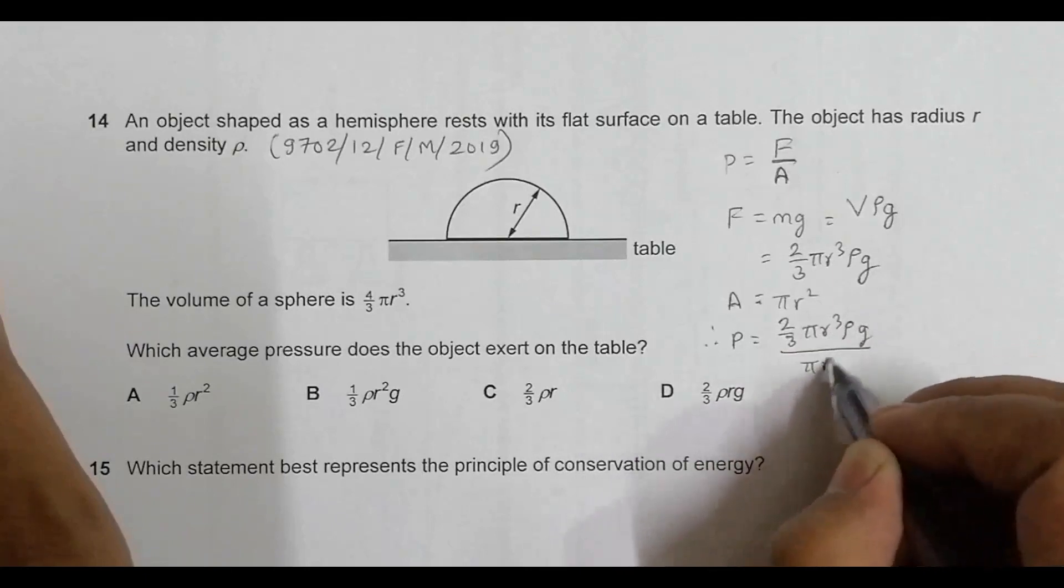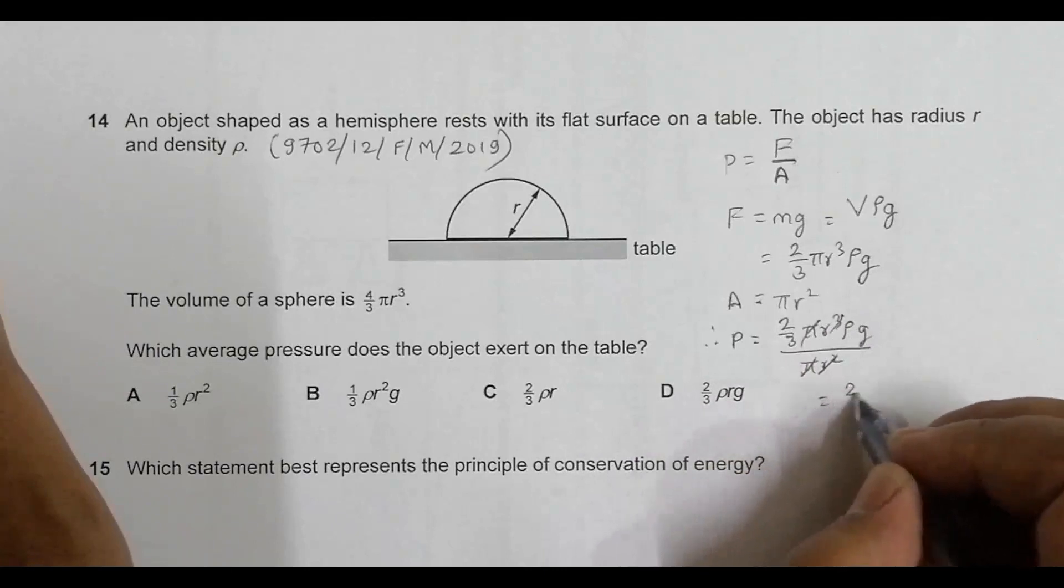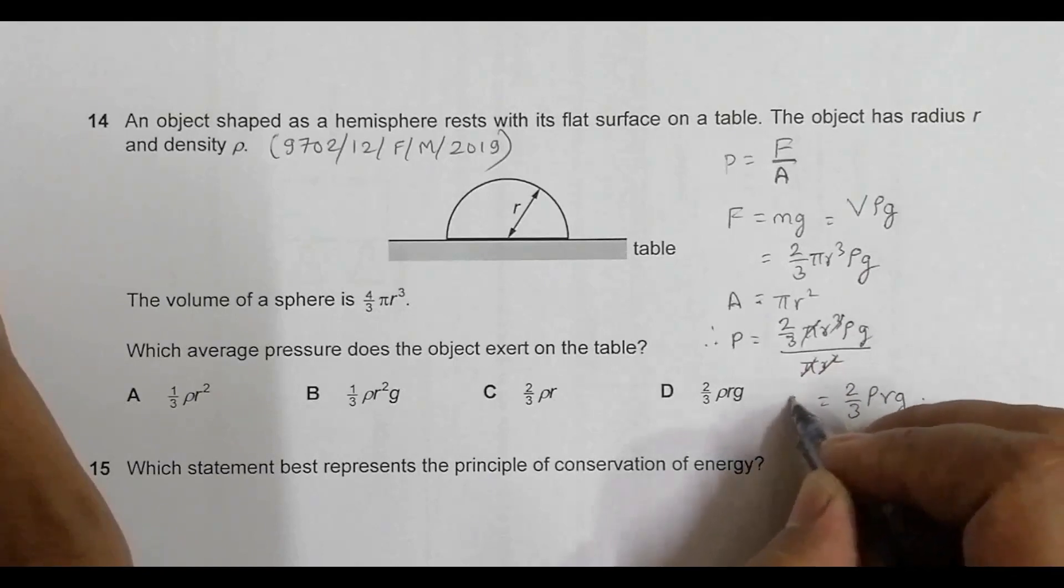π cancels π, r² cancels with r³ leaving r, and it equals 2/3rρg, or we can write it as (2/3)ρrg. So this is the pressure.